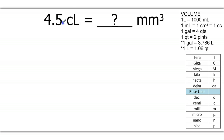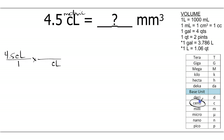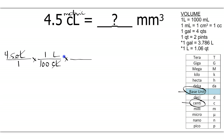This one's going to be a volume conversion, and we're starting out with 4.5 centiliters — put that over one. Bring down centiliter. Centiliter is on our metric units chart at the centi prefix. You always want to go to the base unit, so we want to get from centiliter to liter. Liter is larger, so it gets a 1. When I count from liter to centi, that's 10, 100 — so there are 100 centiliters in a liter. Centiliters have now canceled, and I bring down liter.